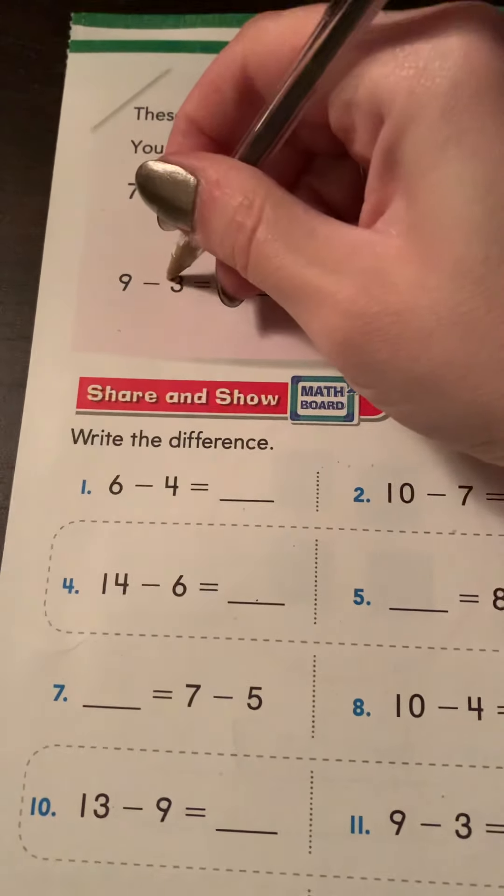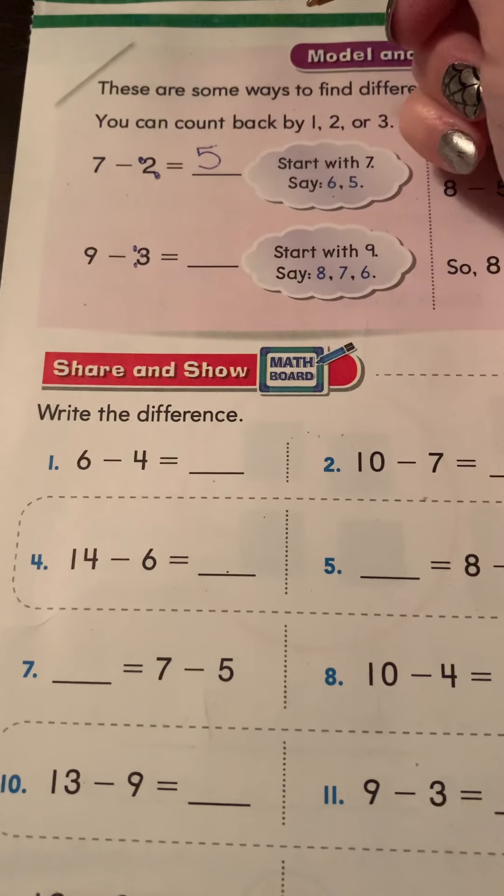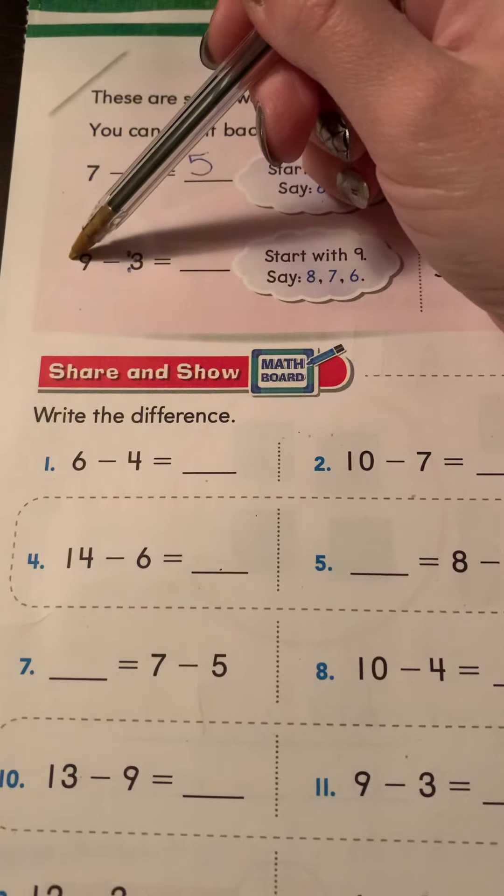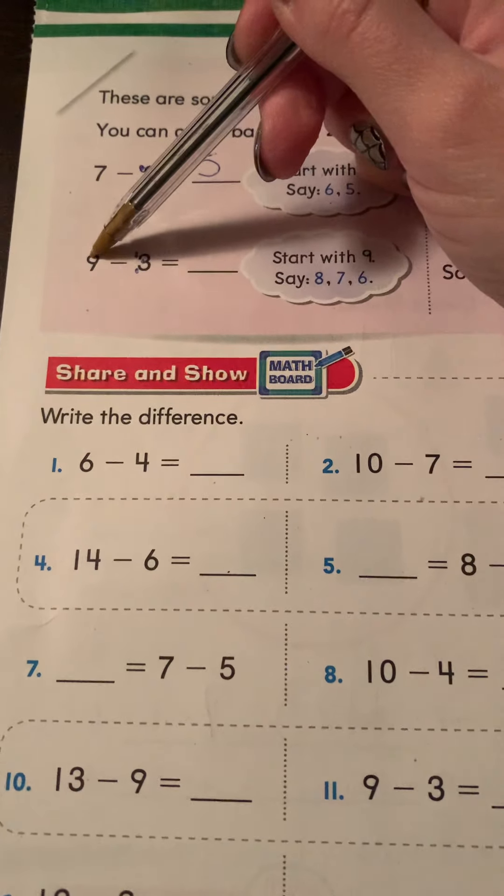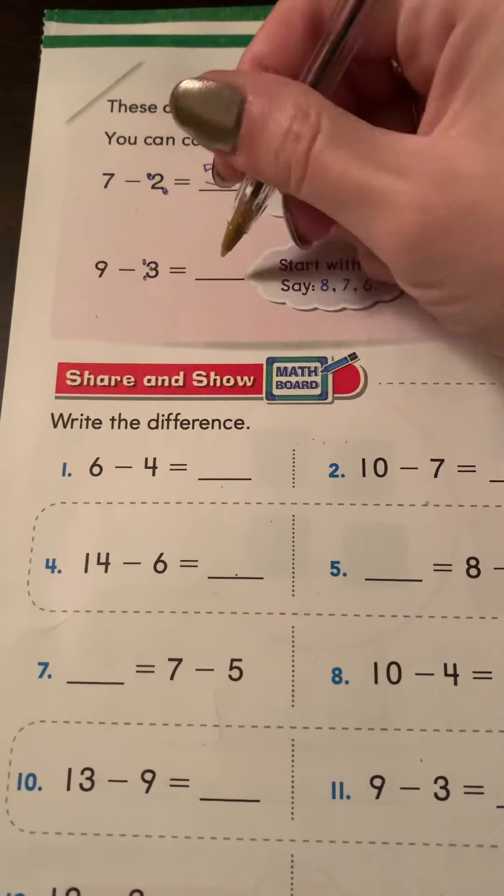We can try it with this one. Put three touch points on the three: one, two, three. Put nine in your head and count backwards. Nine in your head: eight, seven, six. That will help you.